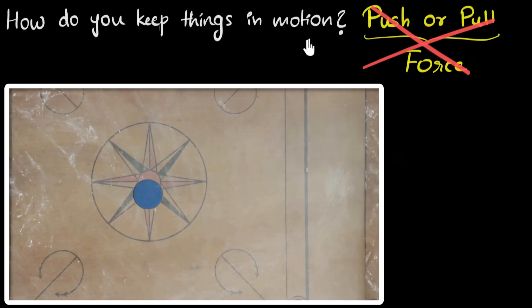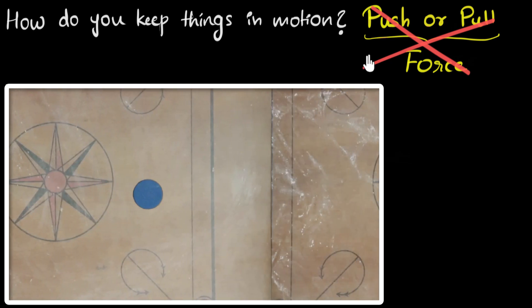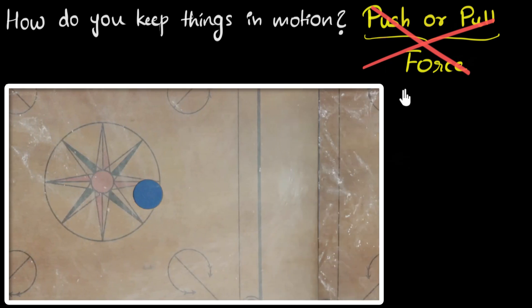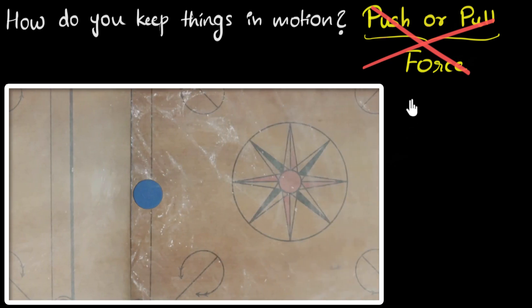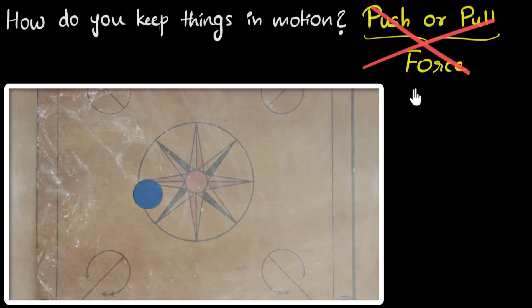And why don't we see this in our daily life? Because of friction. Because friction always acts in the opposite direction of the motion and makes it stop. So it's the friction that's the culprit that makes everything stop.